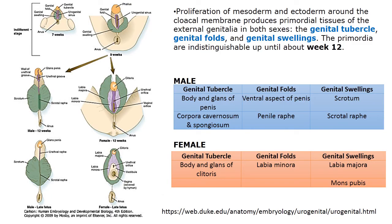The last topic is the development of external genital organs. The most important structures from which external organs develop include the genital tubercle, genital folds, and genital swelling. On this table you can distinguish what develops from each of these parts.